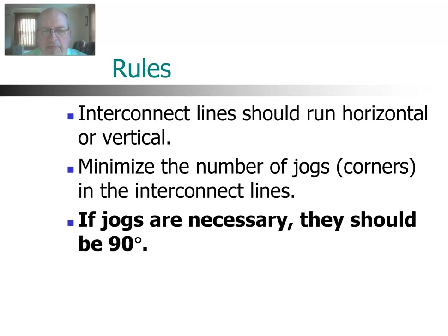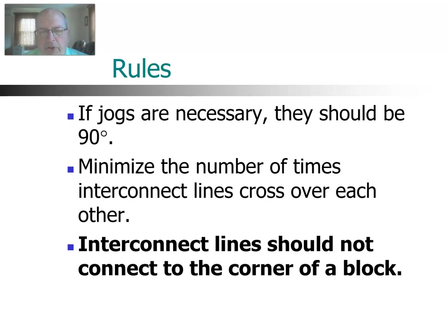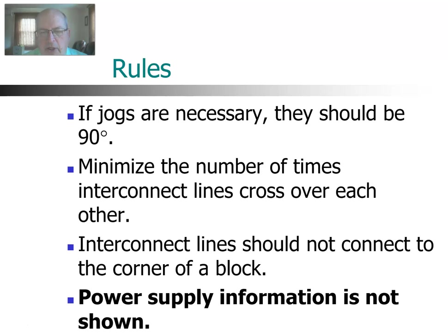When you do have to have a jog, obviously you've got to make sure it's 90 degrees. Otherwise, your signal flow lines would not be horizontal and vertical. So any turns, any jogs are always going to be 90 degrees. You also want to minimize the number of times any interconnect lines cross over one another. Hopefully, you can draw your entire diagram without any crossovers. That's not always possible, but try to eliminate as many as possible. Also, your interconnect lines, your signal flow lines, should not connect from the corner of a block. You don't want to leave a block from the corner or enter a block on a corner. And lastly, we do not include power supply information with our block diagram. We assume that all these electronic circuits require power, but we don't show that.